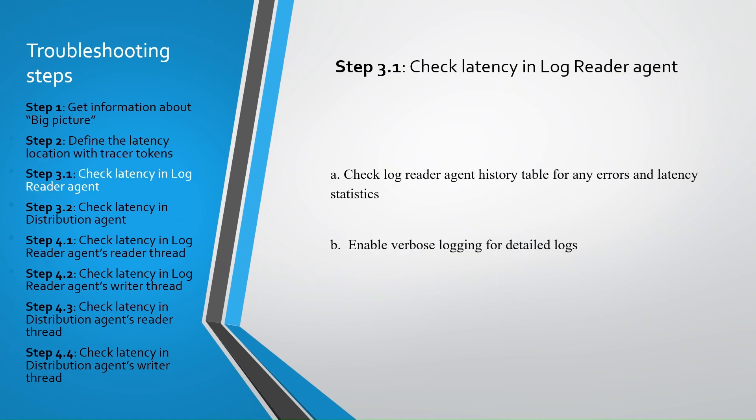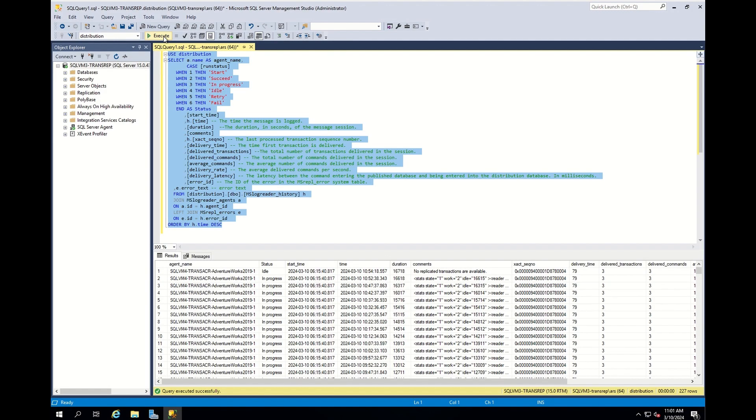Let's assume you face latency in publisher to distributor. In this case, you should investigate the log reader agent in step 3.1. This step has two sub-steps. Firstly, we check the log reader agent's history for any errors or latency statistics. Secondly, we enable verbose logging for detailed logs and check more deeply.